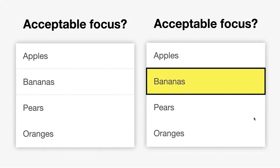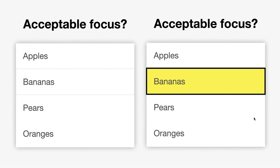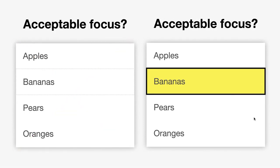So what is an acceptable focus? I've got two examples here. On the left, a very faint dashed border focus — you can just about see that 'bananas' is selected. On the right, an extremely high contrast bright yellow, black, thick outline focus state. Are these accessible? Under WCAG 2.1, they are both accessible, because WCAG 2.1 doesn't say anything about how contrasting your focus needs to be.